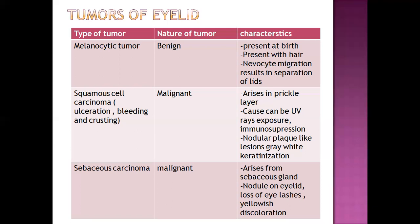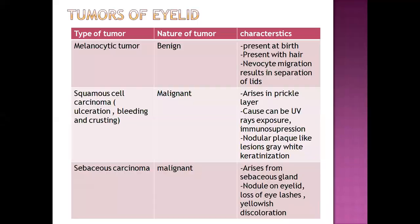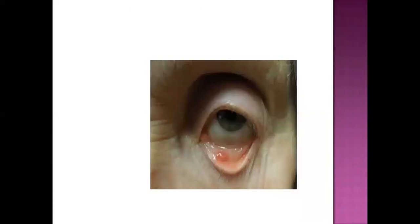Sebaceous carcinoma arises from the sebaceous gland. There is presence of a nodule on the eyelid, loss of eyelashes, and yellowish discoloration. When there is a tumor in the eyelid, the eyelid looks affected and this can be seen in any age group.